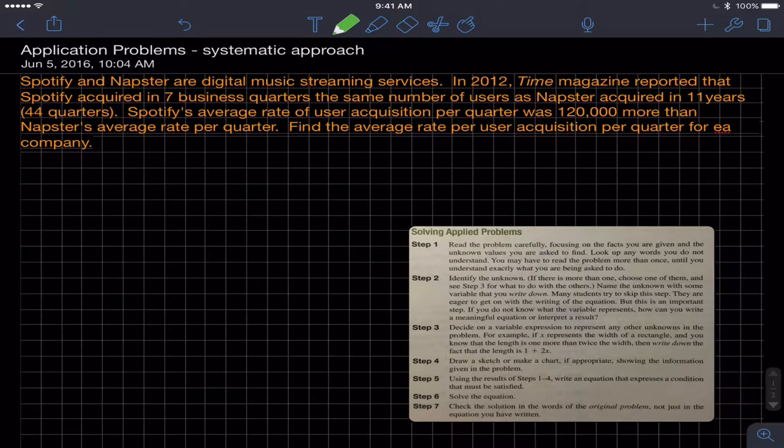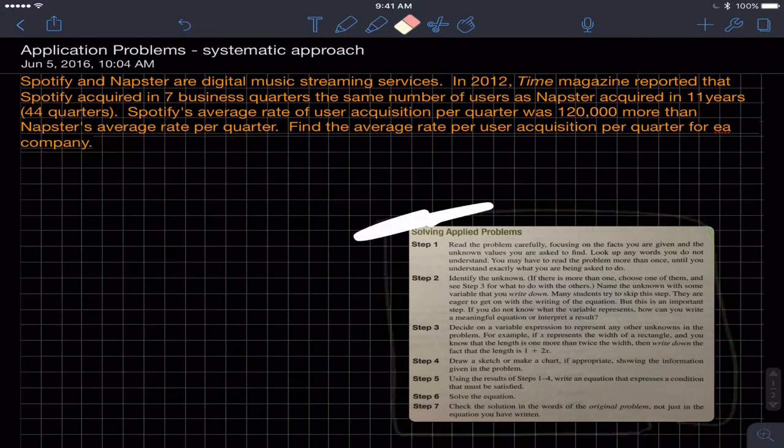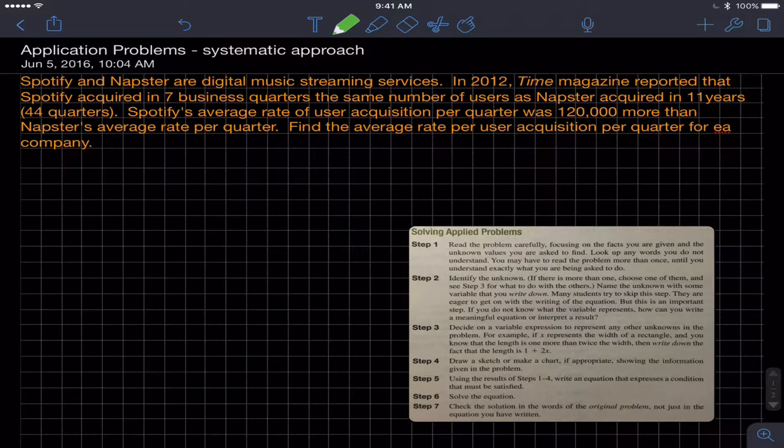The purpose of going through this problem, the Spotify Napster problem which I pulled from a textbook and changed the name to Napster because in 2012 they were separate companies but they've merged. I'm going through this because this particular text, like almost every text out there, has some step-by-step procedure to go through, and this is as good as any other. So we're going to go through this process and see what we come up with to answer this question.